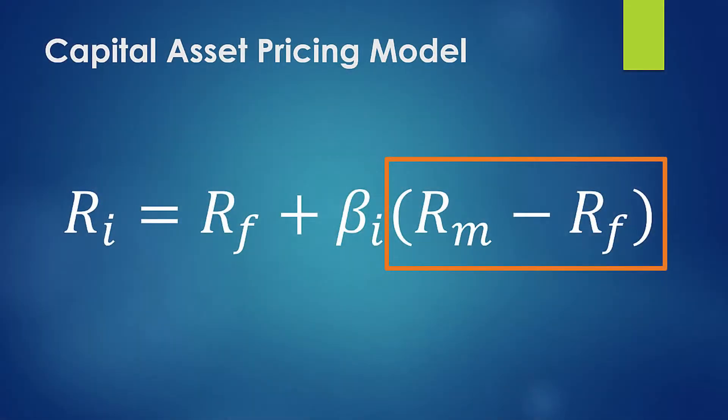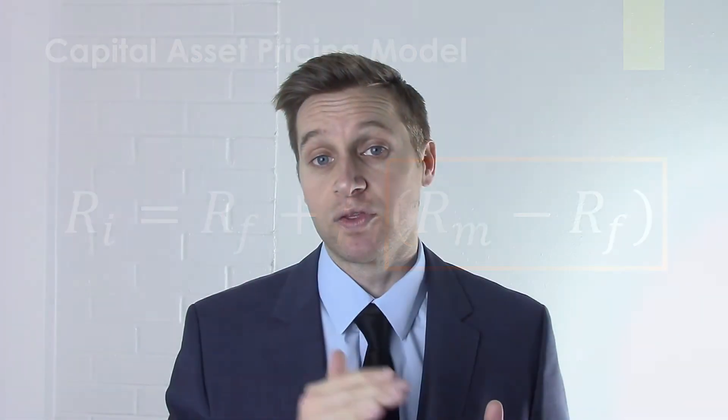To the risk-free rate you're going to add the market risk premium. The market risk premium tells you how much riskier the market is over the risk-free rate. So if you're investing in something like a stock market index fund — the overall market — how much riskier is that than the risk-free alternative?